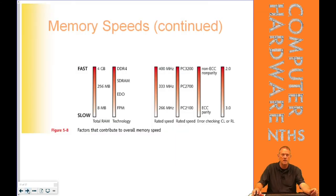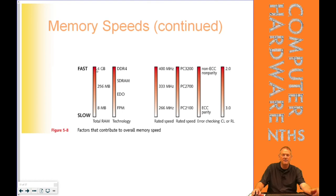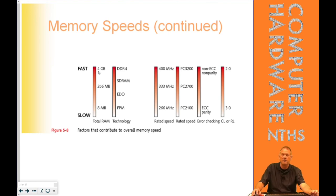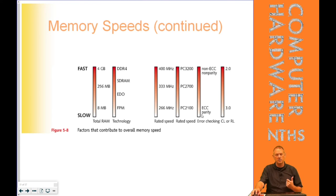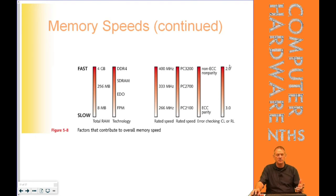To summarize the factors that affect RAM speed: the amount of RAM doesn't affect individual stick speed but does affect overall system performance. The technology generation (DDR4 vs DDR3, etc.) matters — newer is faster. The rated megahertz speed corresponds to the PC rating — higher is faster. Non-error-correcting RAM is faster than ECC RAM. And a lower CAS latency rating means faster RAM. All of these factors together define the overall speed of the RAM and system you're building.